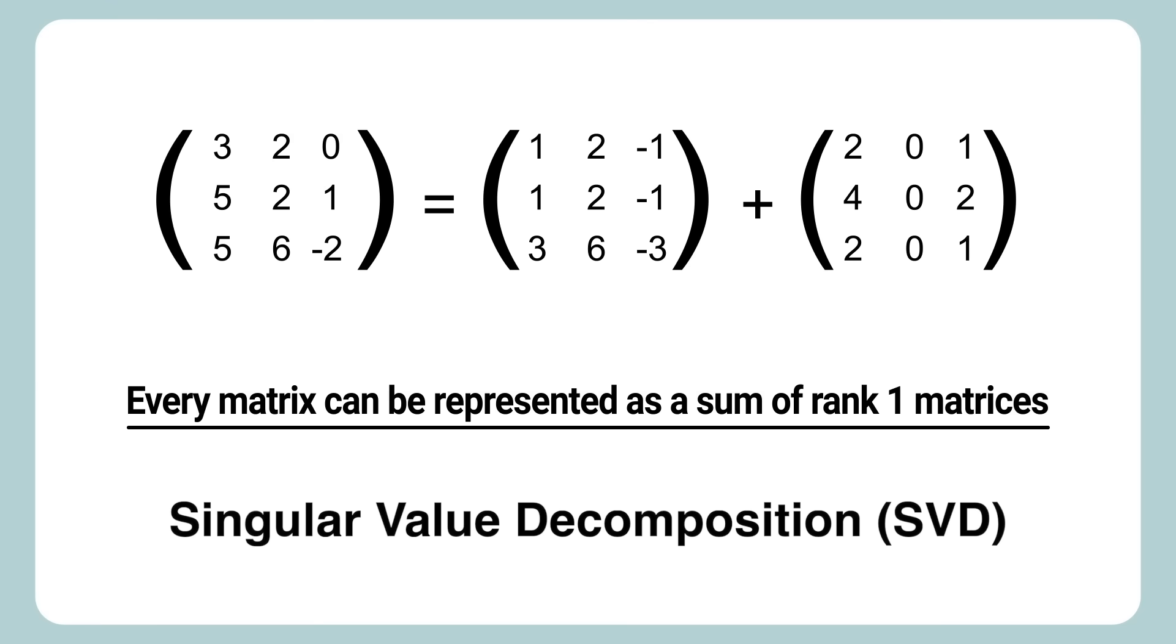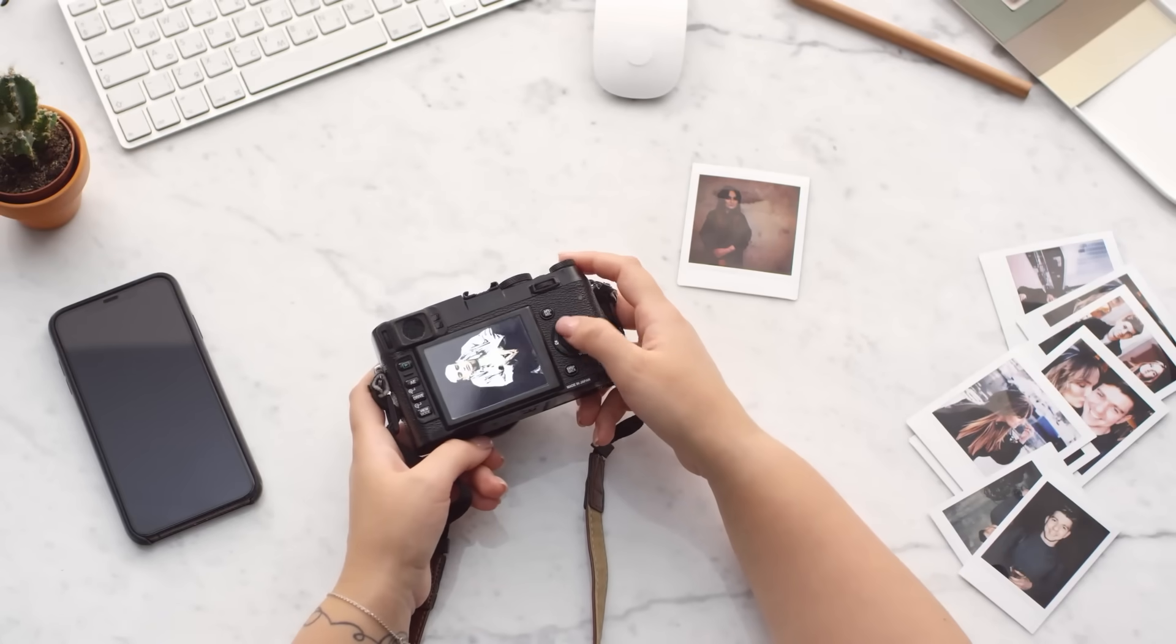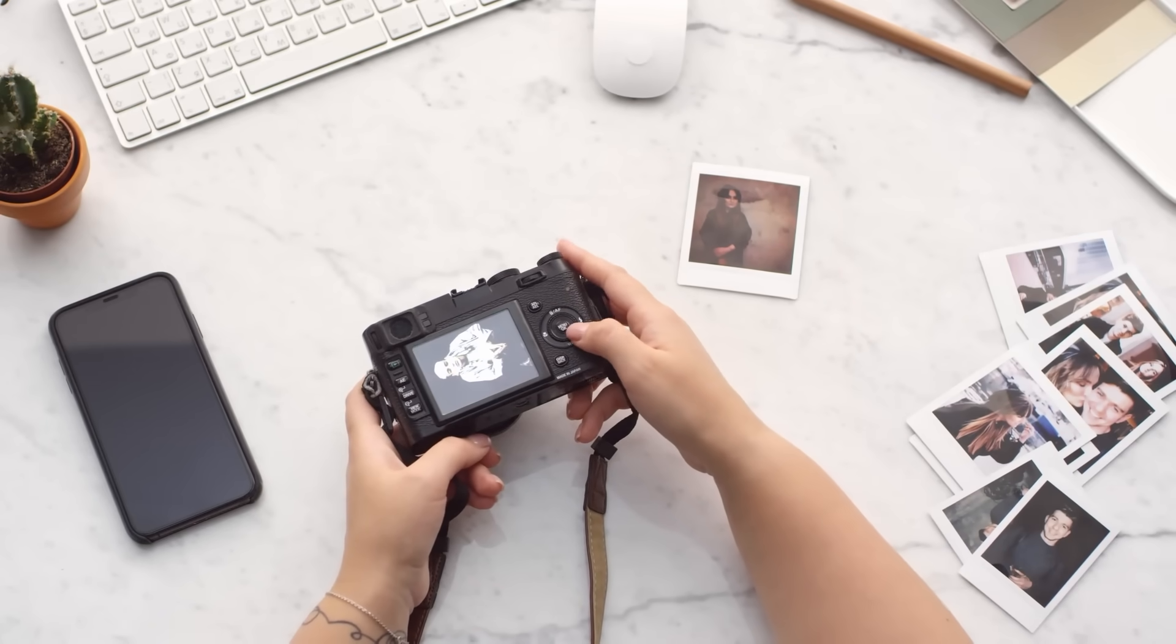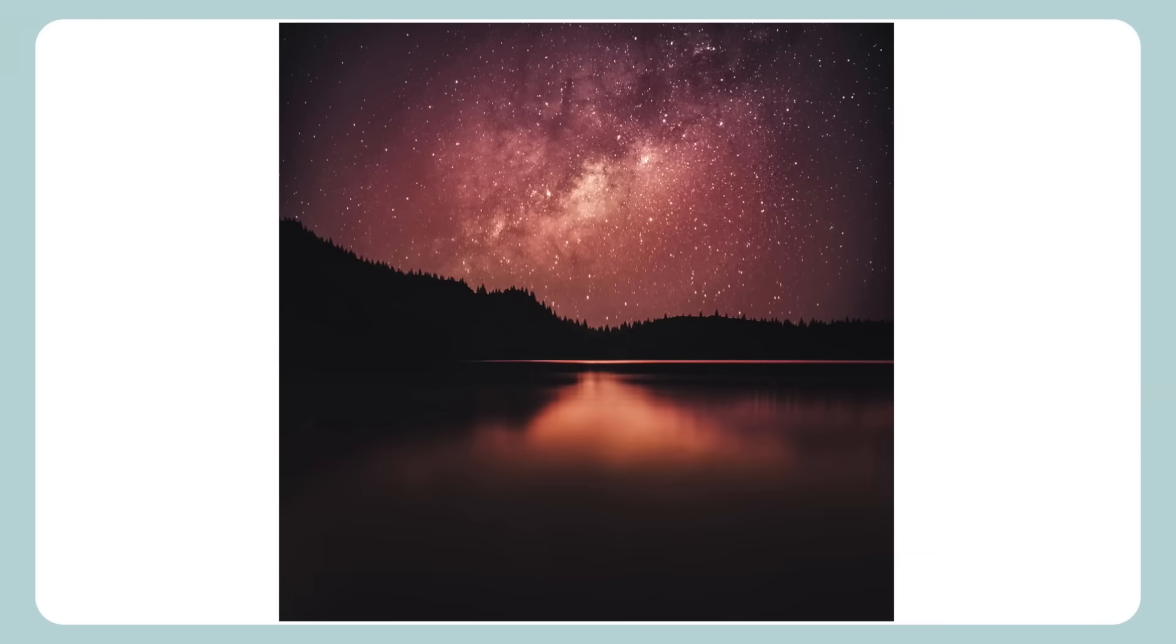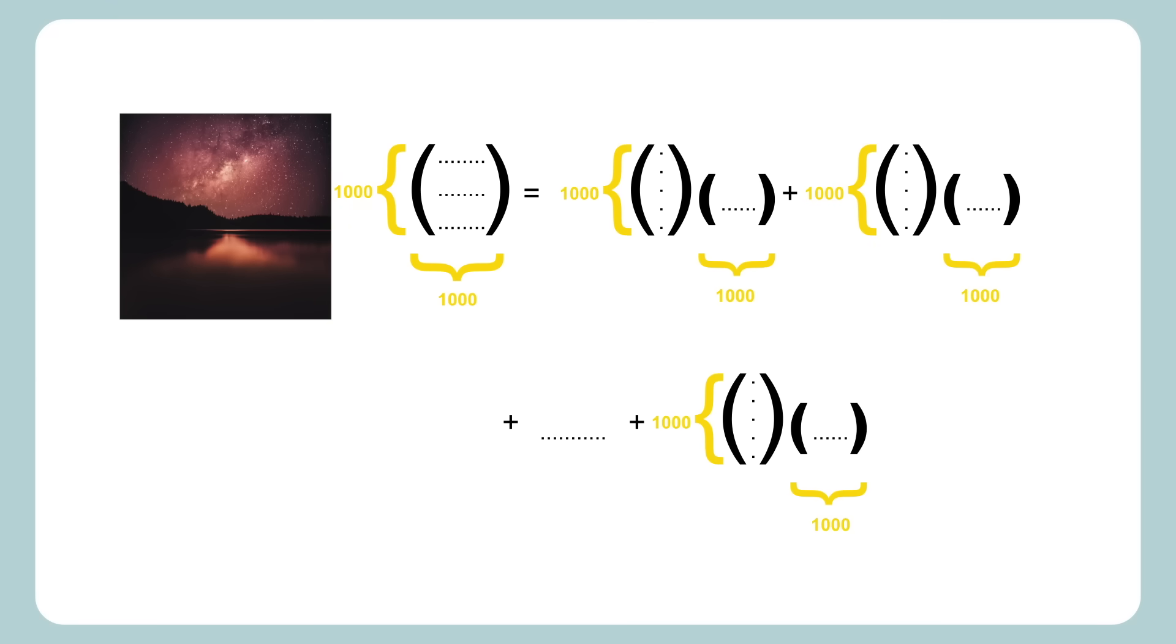But I'm going to start with an application of that which is image compression. Because digital images are really just matrices where each entry is a number representing the pixel value or color. A 1000 by 1000 pixel image is represented by a 1000 by 1000 matrix, each entry being that pixel value. And as we just saw, any matrix can be represented as a sum of rank one matrices, each holding much less data than the original.